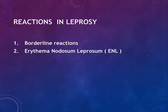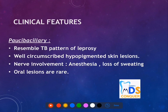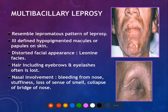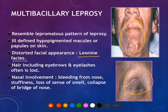Reactions in leprosy are of two types: borderline reactions and erythema nodosum leprosum. In the current classification, paucibacillary leprosy resembles the tuberculoid pattern and oral lesions are very rare. In multibacillary leprosy, oral lesions are seen, along with multiple macular or papular structures on the skin. The characteristic facies seen in multibacillary leprosy are leonine facies, and hair including eyebrows and eyelashes is often lost.